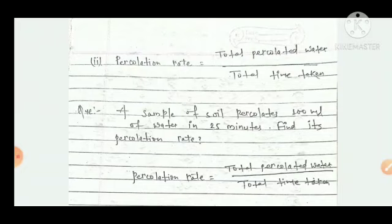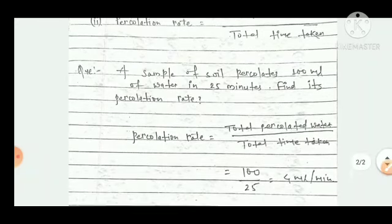So to find the percolation rate, we have to go through the given formula: it is total percolated water by total time taken. Percolation rate is equal to total percolated water by total time taken.